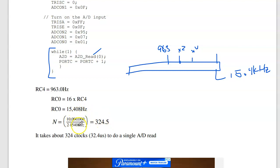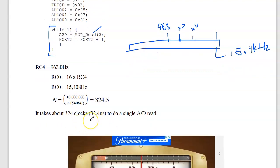That tells me the execution time. 10 million divided by 2 times frequency is 324 clocks. So it takes about 324 clocks to do a single A to D read. And probably should subtract 16 from before. Just setting up that loop is about 16 clocks. So 300-ish. About 30 microseconds to do an A to D read.